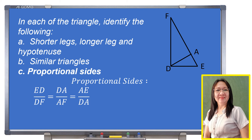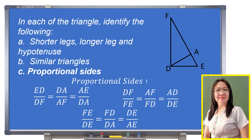For the second possibility: DF (the longer leg) to FE (the hypotenuse) equals FD to AD to DE. For the last possibility: FE (the hypotenuse) to DE (the shorter leg) equals FD to DA, and equals DE to AE.